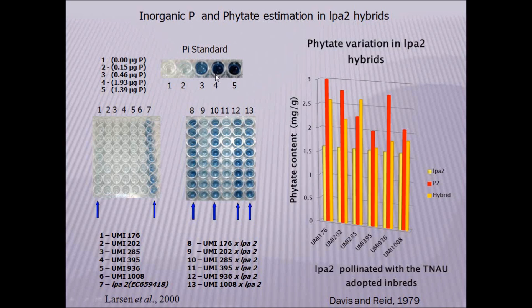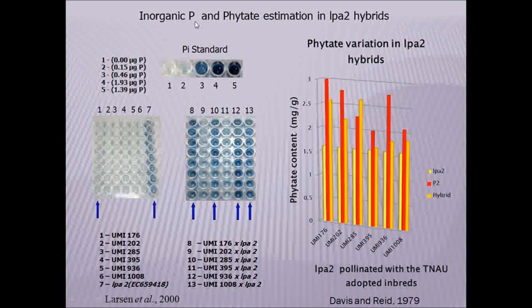The F1 hybrids developed were subjected to the estimation of phytic acid and inorganic phosphorus content. In the F1 developed using our inbred UMI 395 and the LPA2 mutant, we can see there is a low level of phytic acid. The inorganic phosphorus content was also determined using HPLC.